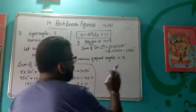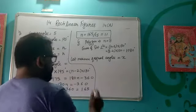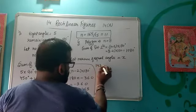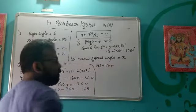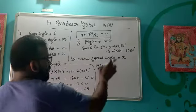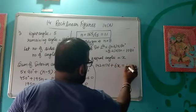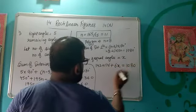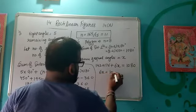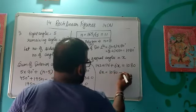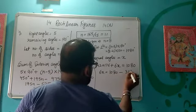Two angles are 142 and 176. There are two given angles, so how many angles are left? Eight minus two equals six. So six×x plus 142 plus 176 equals 1080. Therefore 6x equals 1080 minus 318, which is 6x = 762.